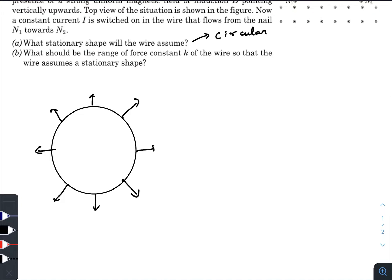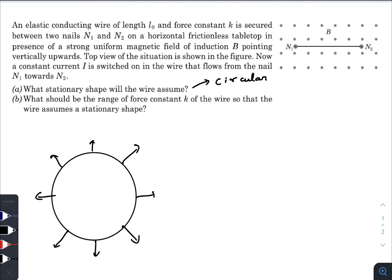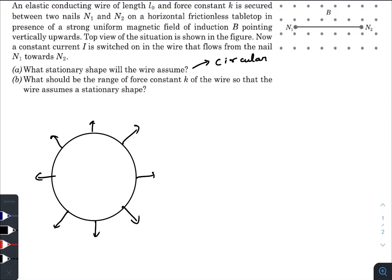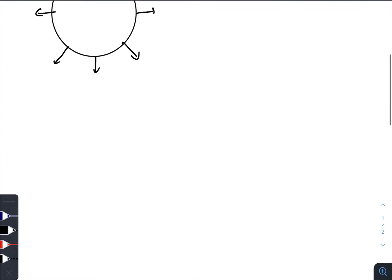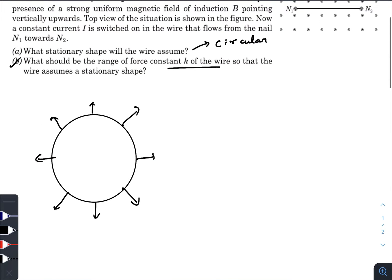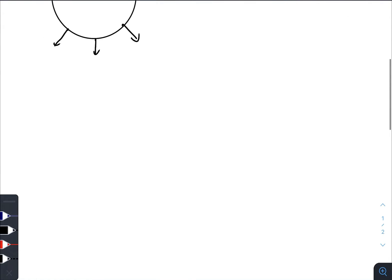So in stationary shape the wire would be a part of a circle. The second question they are asking is what should be the range of force constant k of the wire so that the wire assumes a stationary shape. We need to find the possible range of k so that the wire will attain a stationary shape. We will have a minimum k and a maximum k.